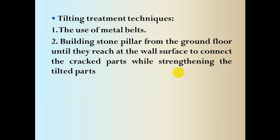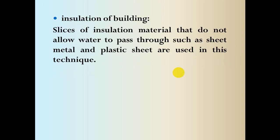For tilting treatment technique — if there is wall tilting, how is it treated? As mentioned, either metal belts are used, or stone pillars from the ground floor reaching up to the wall surface are used to connect the cracked parts while strengthening the tilted parts. Or an external buttress wall (حائط ساند خارجي) is used, which supports the building if it suffers from a tilting problem, from bottom to top — a new wall called a support wall propping the building from the outside.